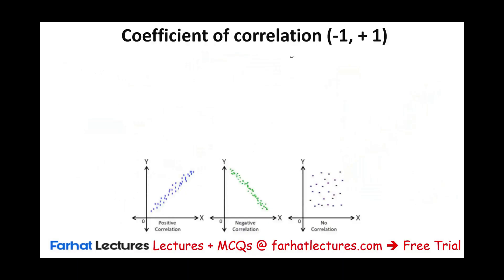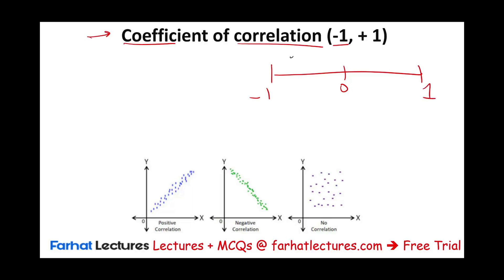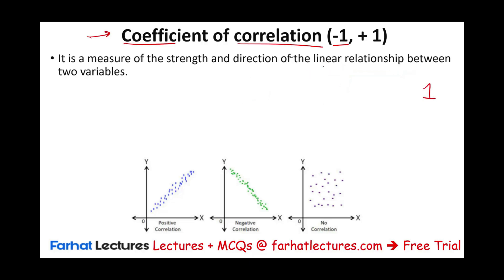When we compute a simple linear regression, we have something called the coefficient of correlation. In this session, since this is for the CPA or CMA exam, I am working with an already-completed linear regression — showing you how to read and interpret the results. The coefficient of correlation measures the strength and direction of the linear relationship between two variables. It ranges from negative one to positive one. They are related, but how strongly are they related?